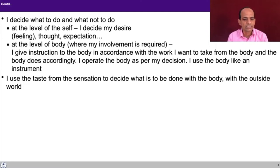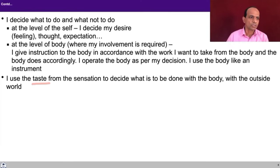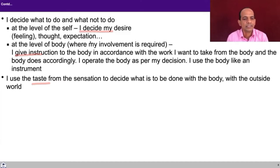I use the taste from the sensation to decide what is to be done with the body and the outside world. You are getting some taste from every sensation. For example, take rain outside — you get some taste out of the rain, and then you decide what to do: either get wet in the rain or protect yourself using an umbrella. The rain is there outside, the body is there, you are reading the sensation, but you are taking some decision. Ultimately it is I who decide my desire, thought and expectation, and at the level of body, I give instruction in accordance with the work I have to take from the body.